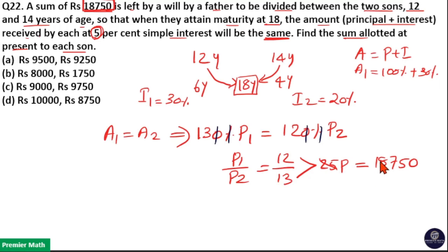Now, 25 goes 7 times in 187, remaining is 12. So, 25 goes 5 times in 125, remaining is 0.